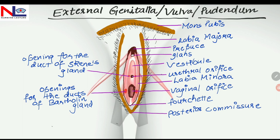On either side of the urethral orifice are the openings of the paraurethral ducts, which open directly into the vestibule and lubricate the urethral opening. On either side of the vaginal opening are the openings of two ducts of the Bartholin gland, also known as the greater vestibular gland. These glands lie at the posterior end of the vestibular bulb and secrete mucus to lubricate the vulva.